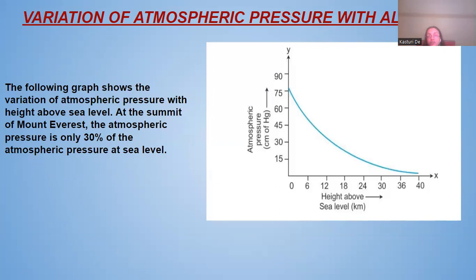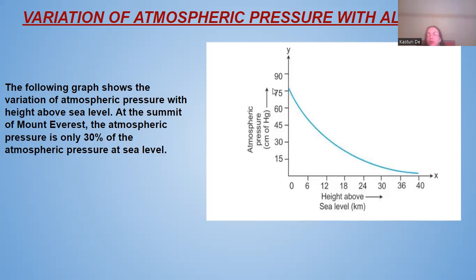This graph represents the variation of atmospheric pressure with altitude. The horizontal axis shows height above sea level — 6, 12, 18, 24, 30, 40 km — and as altitude increases, atmospheric pressure comes down. At sea level the pressure is about 75 cm of mercury, then it decreases to 60, 45, 30, 15, approaching near zero at the highest altitudes. At the summit of Mount Everest, the atmospheric pressure is only 30% of the atmospheric pressure at sea level.